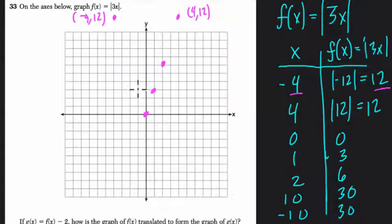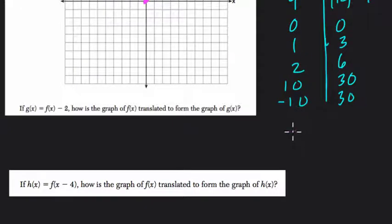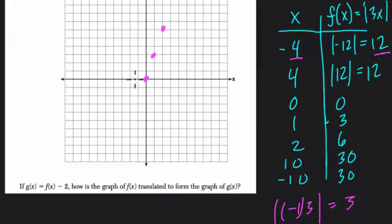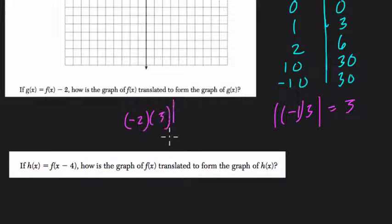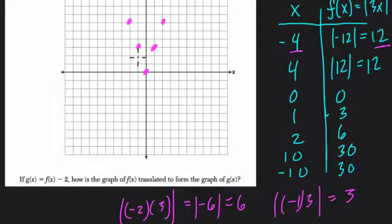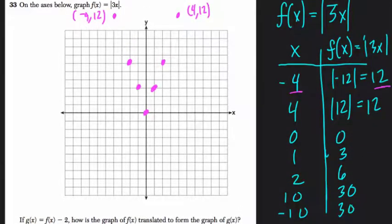So I need more information. I'm going to choose negative one as an input: three times negative one is negative three, the absolute value of that is just three. So plugging in negative one gives an output of three. I notice both one and negative one have the same height, so I'm wondering if negative two will also give the same height as two. Negative two times three — take the absolute value — gives negative six, absolute value is six. So yes, plugging in negative two also gives a height of six.